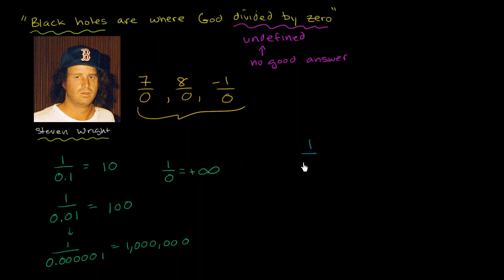Well, 1 divided by negative 0.1, that's going to be negative 10. 1 divided by negative 0.01, that's going to be negative 100. And if we go all the way to 1 divided by negative 0.00001, yep, I drew the same number of zeros, that gets us to negative 1 million.